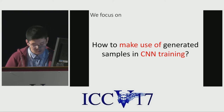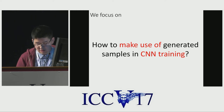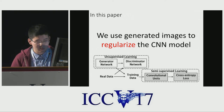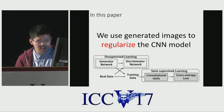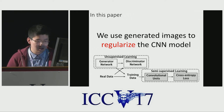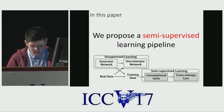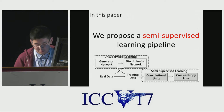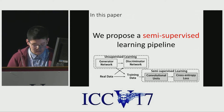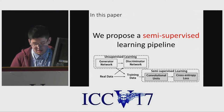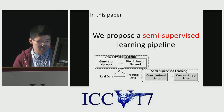In this work, we use generated images to regularize the CNN model, because generated data are a good source for training CNN. We propose a semi-supervised learning pipeline with two components: a Generative Adversarial Network for unsupervised learning, and a Convolutional Neural Network for semi-supervised learning.